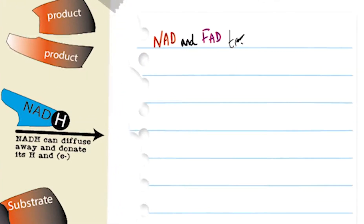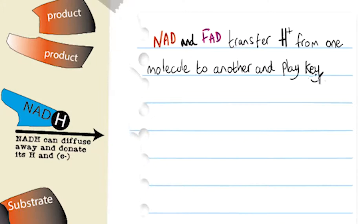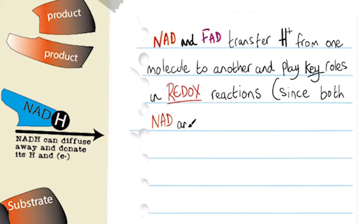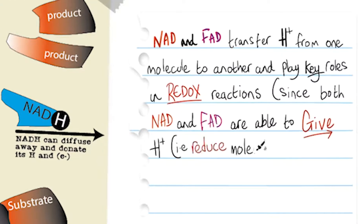NAD and FAD transfer hydrogen ions from one molecule to another and play key roles in redox reactions, since of course both NAD and FAD are able to give their protons and reduce molecules, and they can accept protons, i.e. oxidize molecules.